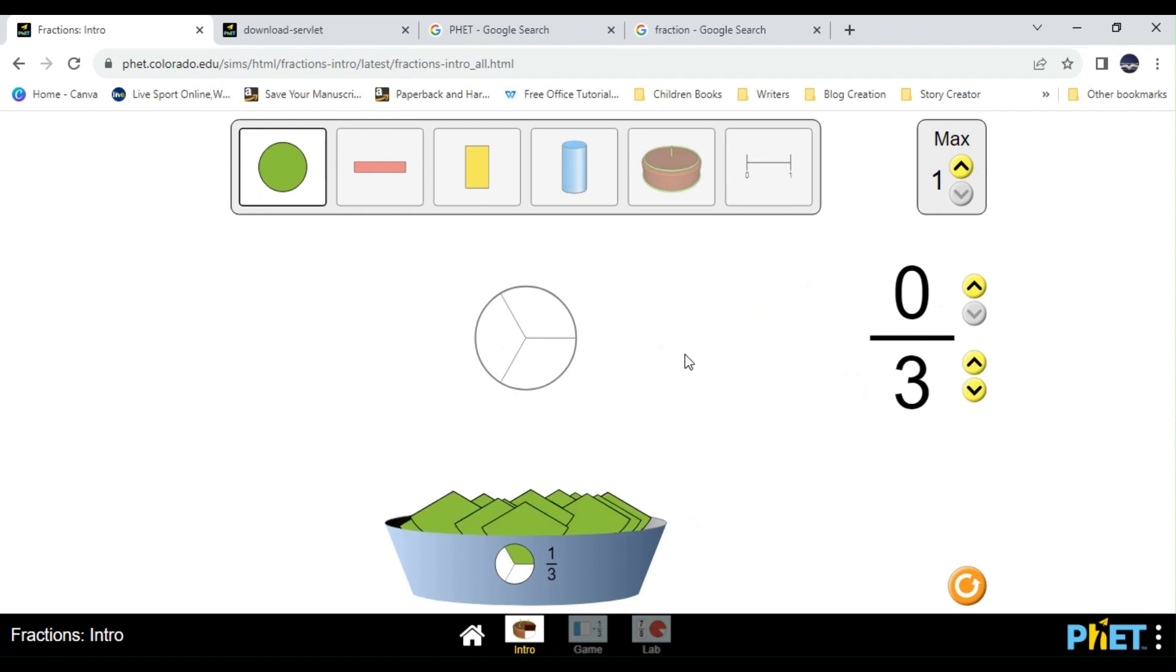Make it three parts. So we have one, two, three. So the denominator of a fraction shows us the total number of parts. I can use a different shape.